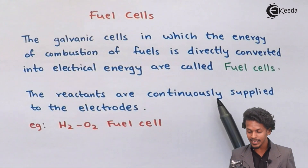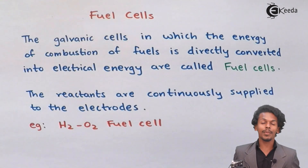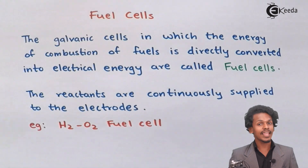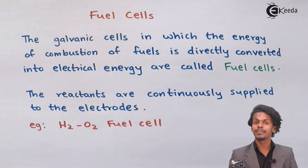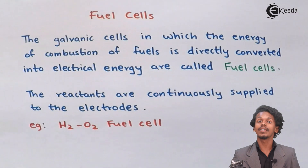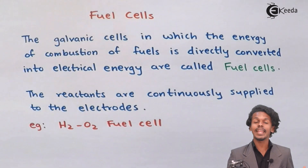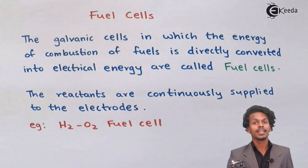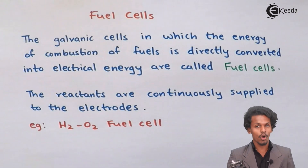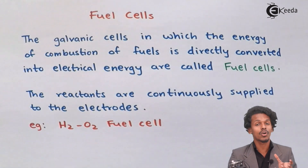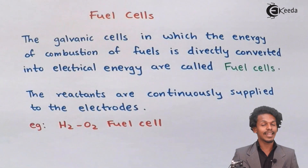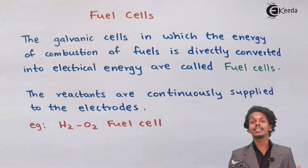In a fuel cell, the reactants are continuously supplied to the electrodes. These are a special kind of galvanic cell requiring a continuous flow of reactants, unlike earlier galvanic cells such as the Daniel cell or dry cell, where chemicals are present in a fixed quantity. In those cells, spontaneous current flows within the limited amount of chemicals present.